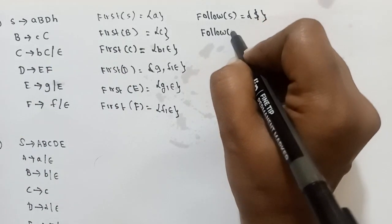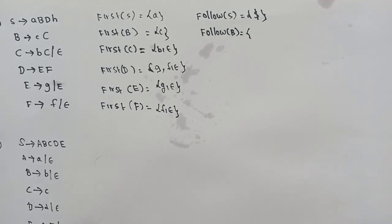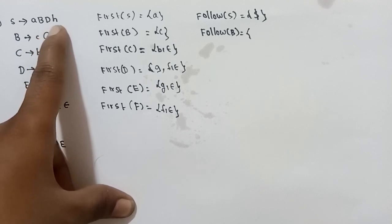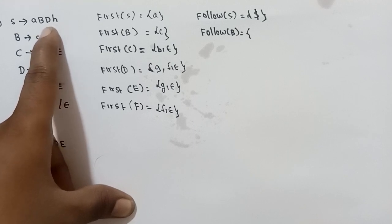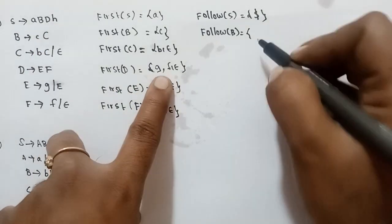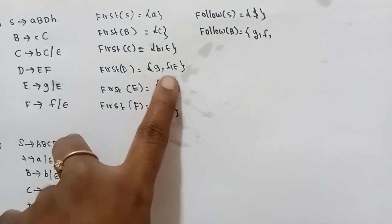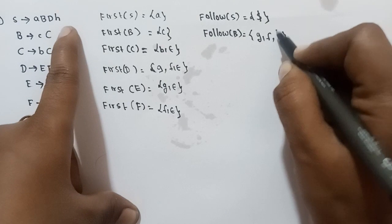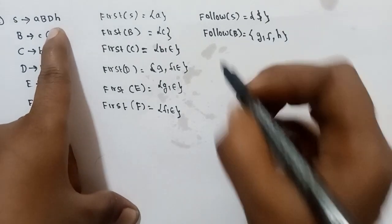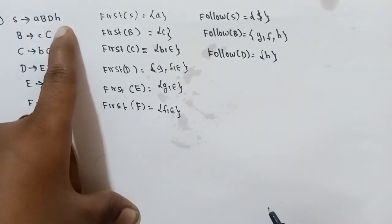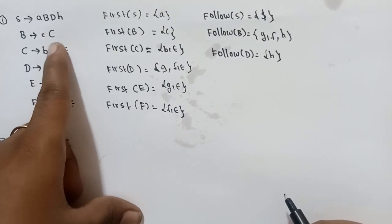Next, FOLLOW of B. Since B is a non-terminal, FOLLOW of B equals FIRST of D. Since epsilon is in FIRST of D, we take FIRST of D minus epsilon, union FIRST of H. Since epsilon is in FIRST of D, FOLLOW of B equals FIRST of D minus epsilon, union FOLLOW of A, giving FOLLOW of B equals {G, H}.